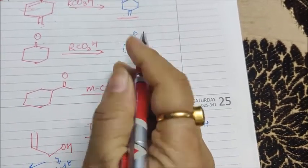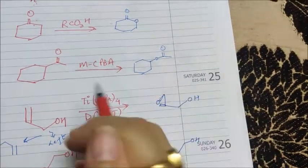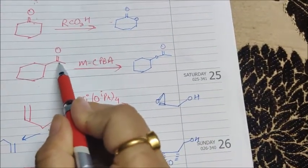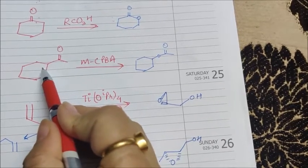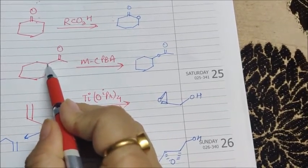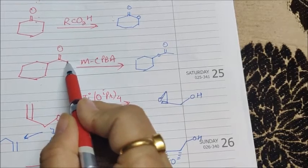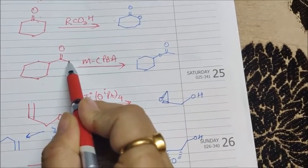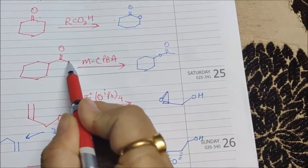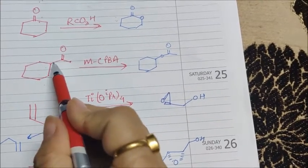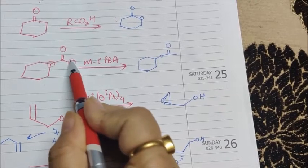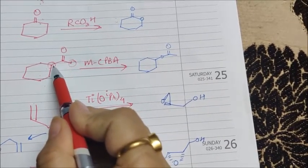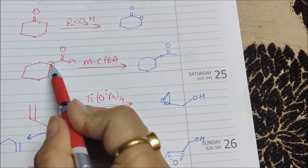In the next question, it is a ketone again, but now the two R groups are different. This is a secondary carbon and this is a primary carbon. And as you remember, the ease of migration is that two-degree carbon has more tendency to migrate than one-degree carbon, hence this carbon will be migrating and oxygen will be introduced here.